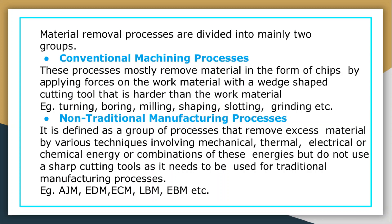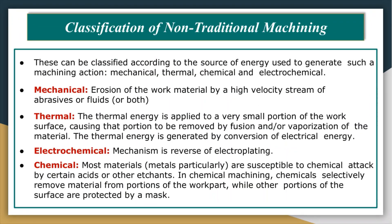Non-traditional machining processes are defined as a group of processes that remove excess material by various techniques involving mechanical, thermal, electrical, or chemical energy — or combinations of these — but do not use a sharp cutting tool as required in traditional machining. Examples include abrasive jet machining, electric discharge machining, electrochemical machining, laser beam machining, plasma arc machining, and ion beam machining.